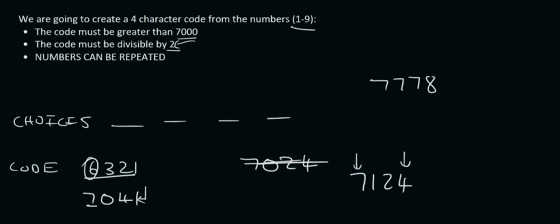The number 7, 7, 7, 8 works because we are allowed to repeat and the end number is divisible by 2 and this whole number is bigger than 7,000.